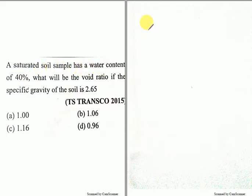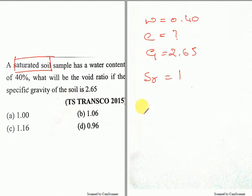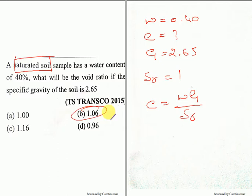A saturated soil sample has a water content equal to 0.40. What will be the void ratio if the specific gravity is 2.65? One thing to concentrate on: they are telling this is a saturated soil, so the degree of saturation equals 1 since it is fully saturated. When the soil is fully saturated it is a two-phase system with soil and water. Using E equals WG divided by SR, you are supposed to get the answer as 1.06.